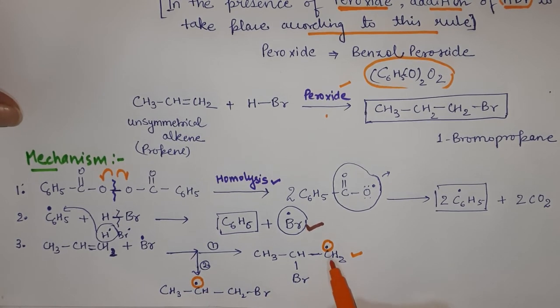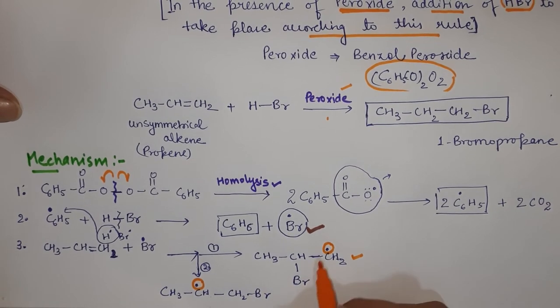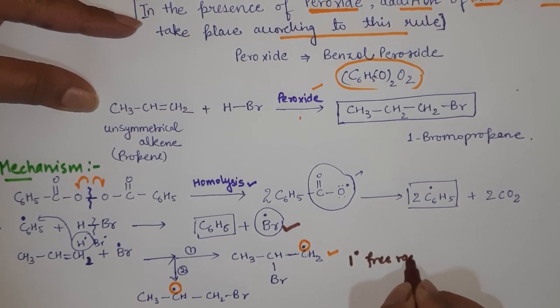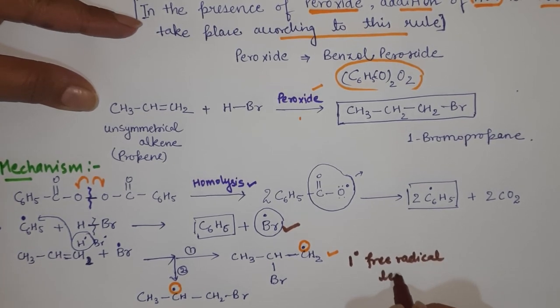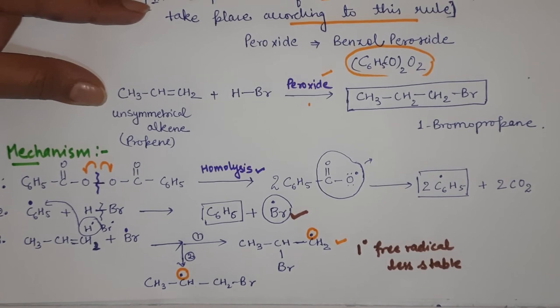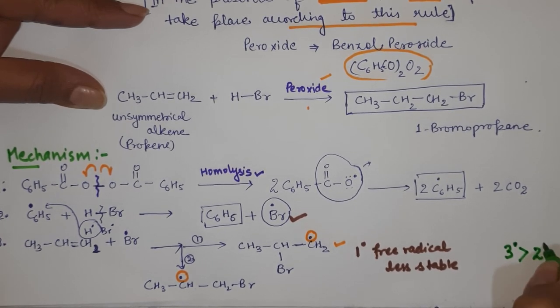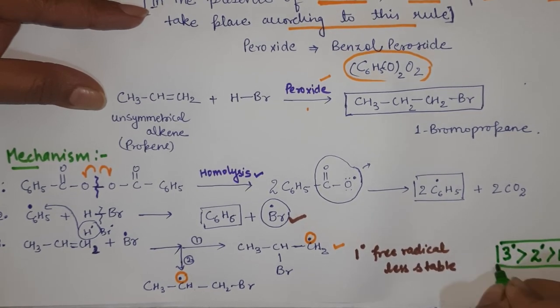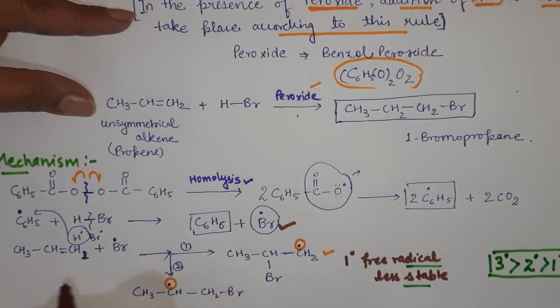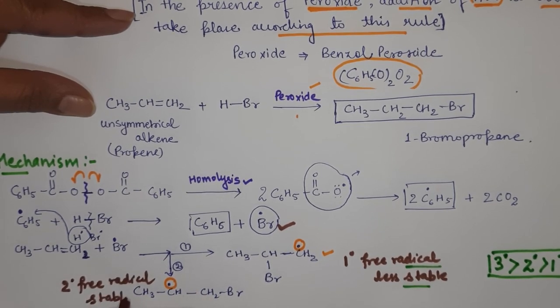Again the same way you apply here also: which radical is most stable, only that product will be the major one. So here you can see that, please remember, the primary free radical is less stable as compared to secondary and tertiary. So the order of this stability will be tertiary free radical is much more stable as compared to the secondary one, and then the last is primary. This is the order of free radical stability. This is the secondary free radical, so that's why the product which is going to form more stably is this one.